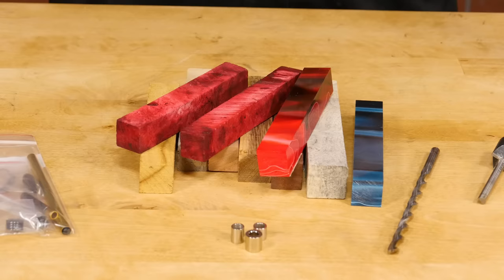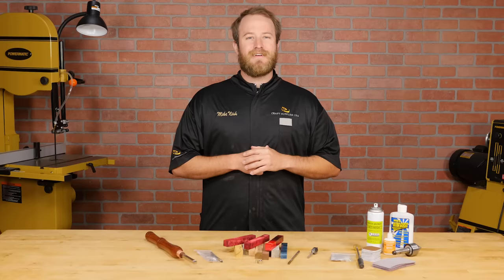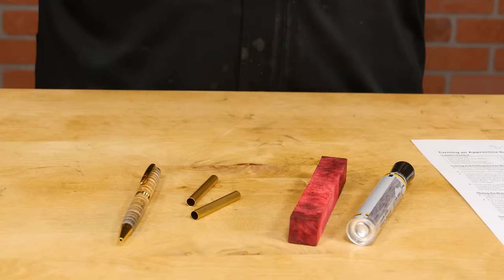When turning pens I prefer to use dense hardwoods, stabilized woods, or acrylic blanks. Pens get handled a lot and soft woods will show dents and scratches easily, so I'm going to be using a stabilized box elder burl pen blank. And as a resource for this video we'll include links to all the products we've used in the description below.